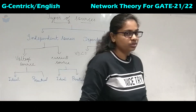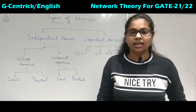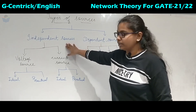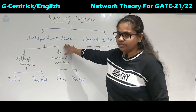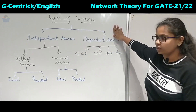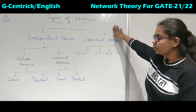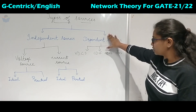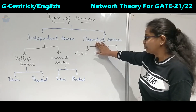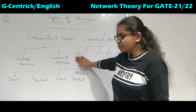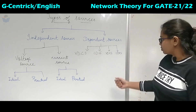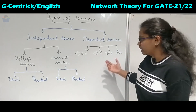Coming to dependent sources, they do not exist in the real world — we use only independent sources in our calculations. But for dependent sources, we use them in modeling of solid-state devices like op-amps. Under this classification, we also have four sub-categories: voltage dependent current source, current dependent current source, voltage dependent voltage source, and current dependent voltage source.